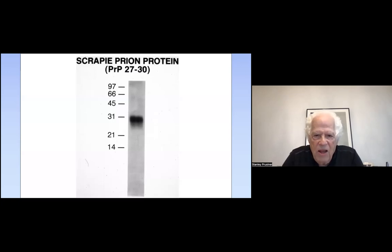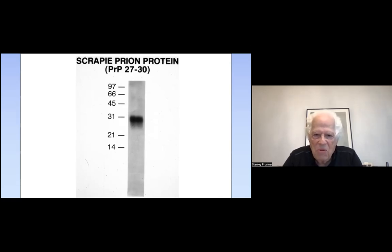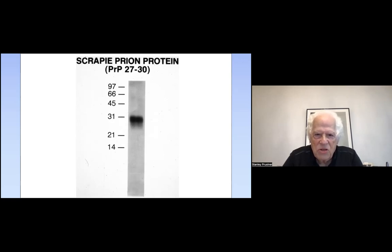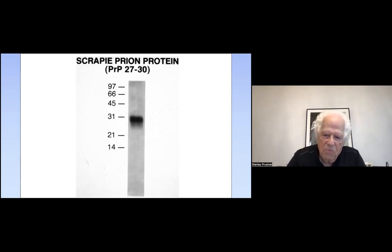When we finally for the first time saw a physical entity — a protein that was only present in scrapie preparations of brains from infected animals — we now had something we could look at. The protein by itself is protease-resistant, 27,000 to 30,000 daltons. This was the beginning of the molecular biology of prions.